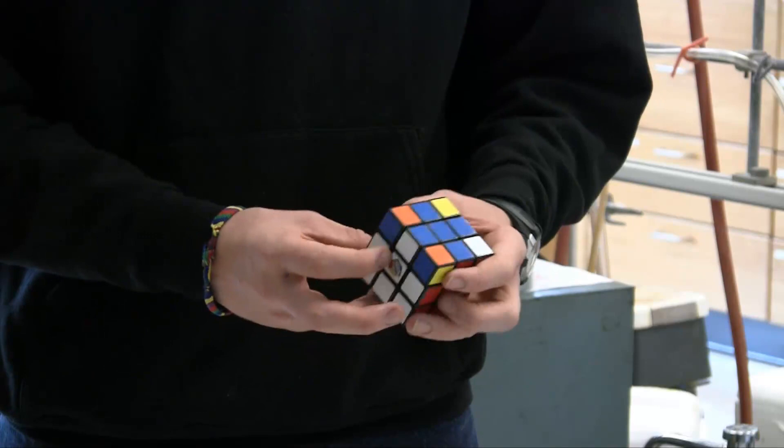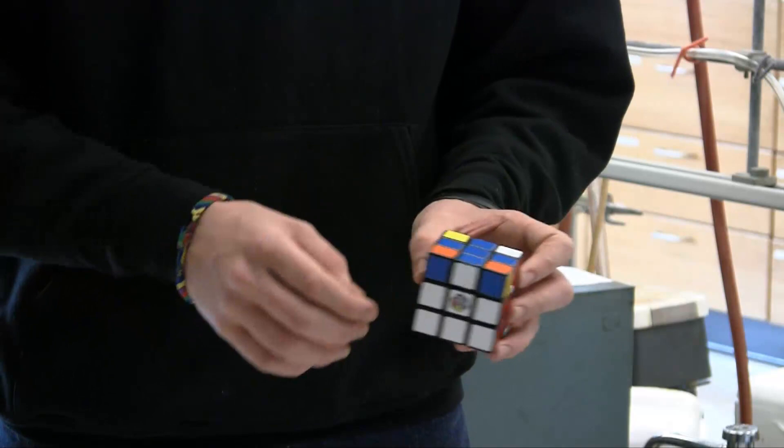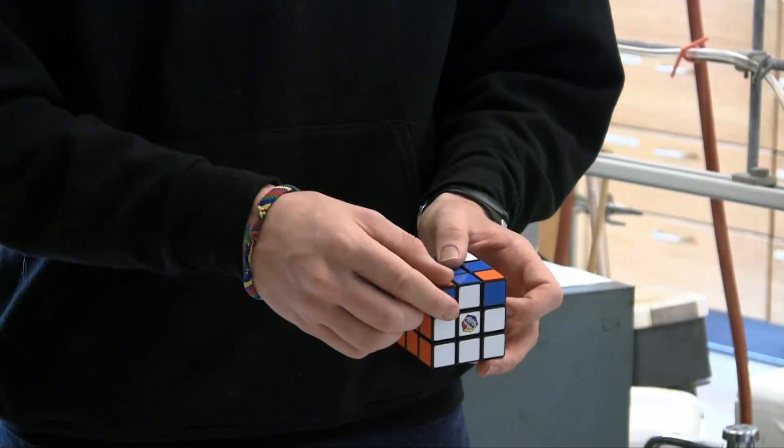Now at this point I need to find a correct corner that the three colors match the three sides. In this case it's the blue, orange, white corner. Even though it's not oriented correctly so that those colors are facing those sides, you just need those three colors matching these three sides in some combination.